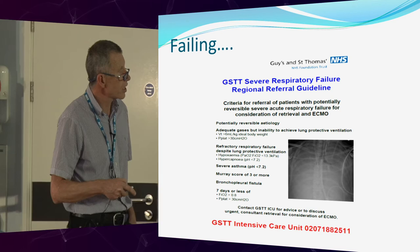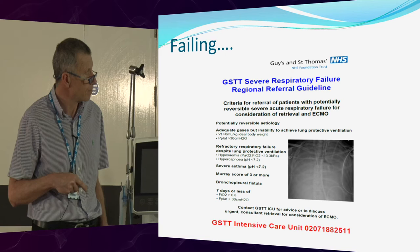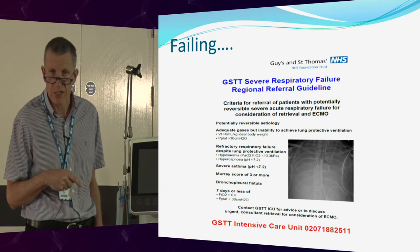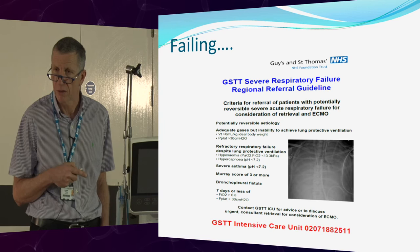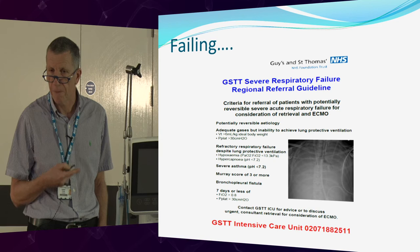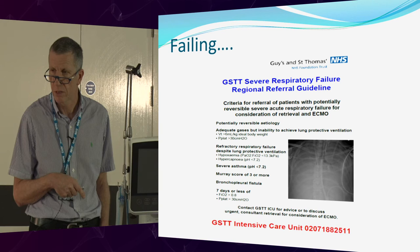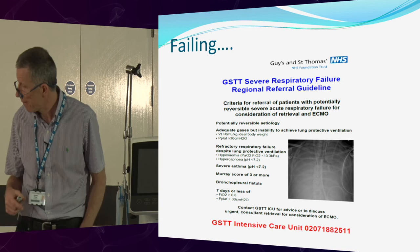These are the criteria for ECMO. The main thing is to think about it early. If you've got a young person with very severe ARDS, get them onto APRV — hopefully it sorts it out. But if you're struggling on APRV, you've got prone ventilation. Try them both if necessary. And if you're still failing, you need to be getting onto your referral centre for ECMO if they're appropriate.